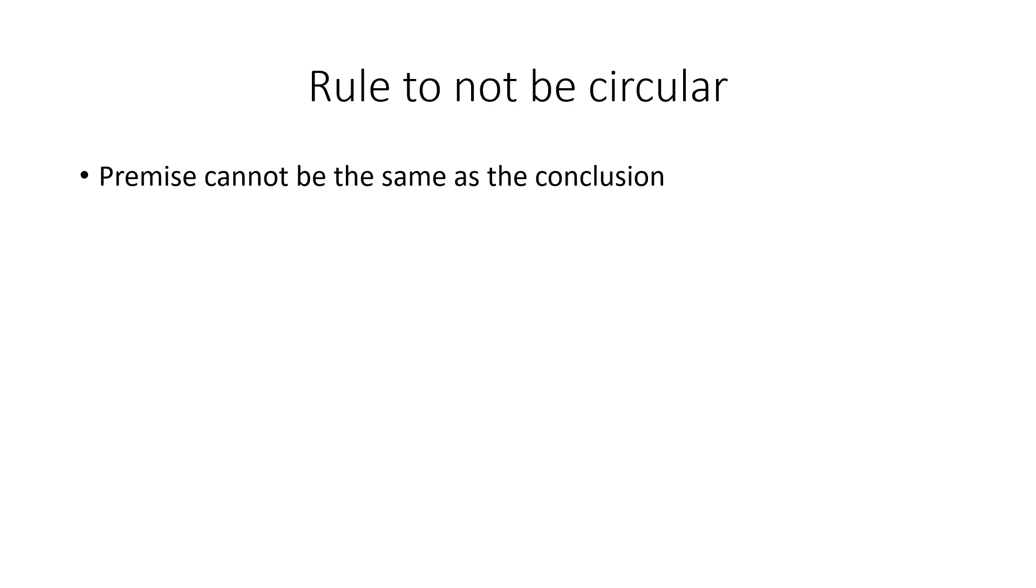So, to avoid circular reasoning, when you're giving an argument, none of the premises can be the same as the conclusion. So, you can't have a single premise in the argument which is the same as the conclusion. As long as you stick to that, your argument will not be circular.